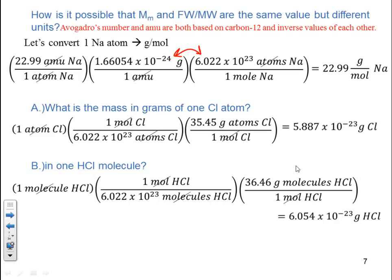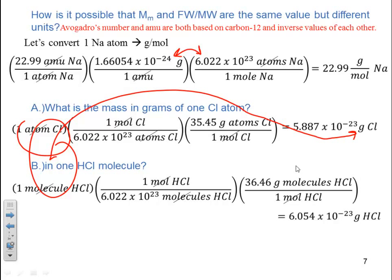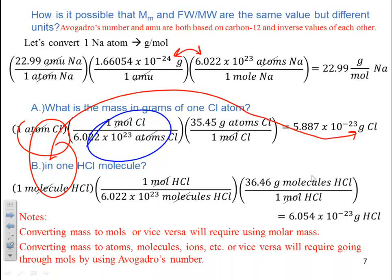Again, if going from atoms or molecules to grams, you must go through Avogadro's number. That's something we'll do on a couple of homework problems and one or two test problems. Converting mass to moles and vice versa requires molar mass — that's something we'll do a lot. Converting mass to atoms, molecules, or ions requires going through moles using Avogadro's number.